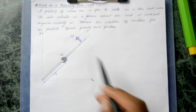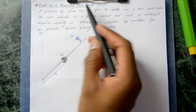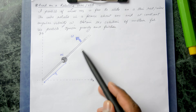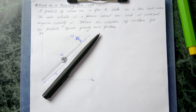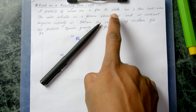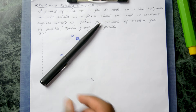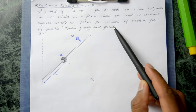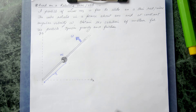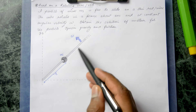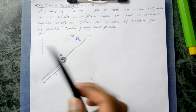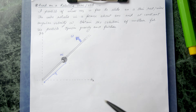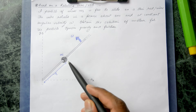Here is another problem of mechanics: a bead on a rotating wire or rod. A particle of mass m is free to slide on a thin rod, which is rotating in a plane about one end at a constant angular velocity omega. We want to obtain the solution of motion for the particle, ignoring gravity and friction.